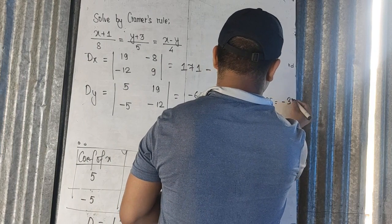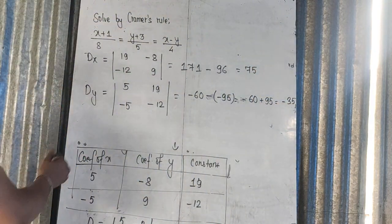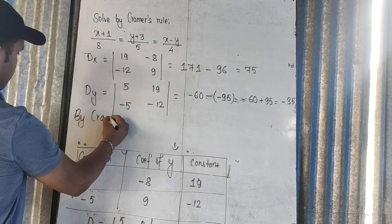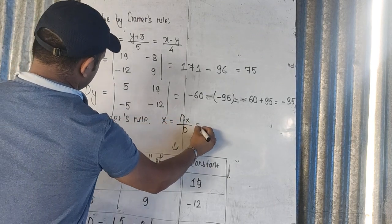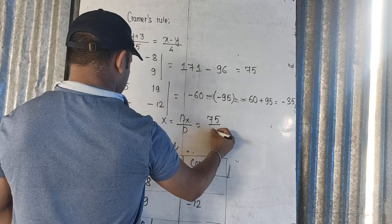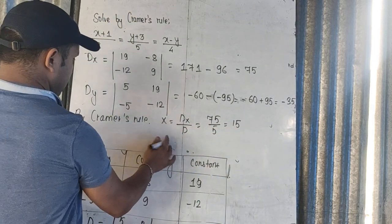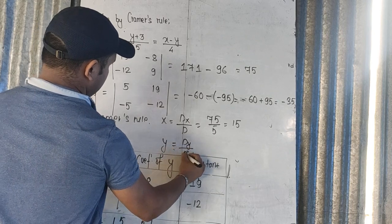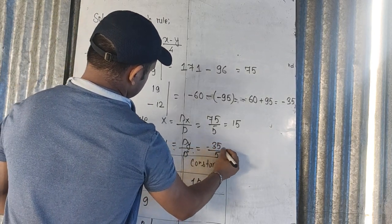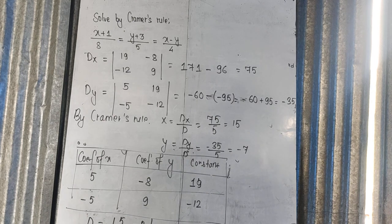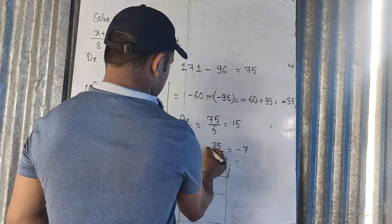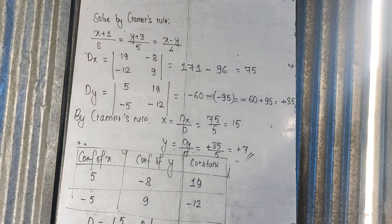By Cramer's Rule, x equals Dx by D, so 75 divided by 5 gives x equals 15. Similarly y equals Dy by D, so minus 25 divided by 5 gives minus 5. Wait, the answer is not minus 7 — let me correct: the solution is x equals 15 and y equals the corrected positive value.